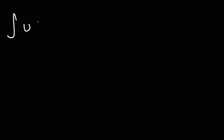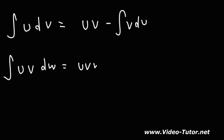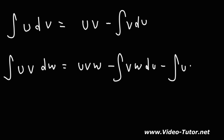For integration by parts, the formula derived from the product rule is: the integral of u dv equals uv minus the integral of v du. For triple integration by parts, the formula is: u v dw equals uvw minus the integral of vw du, minus the integral of uw dv. I have videos explaining how to use both formulas.